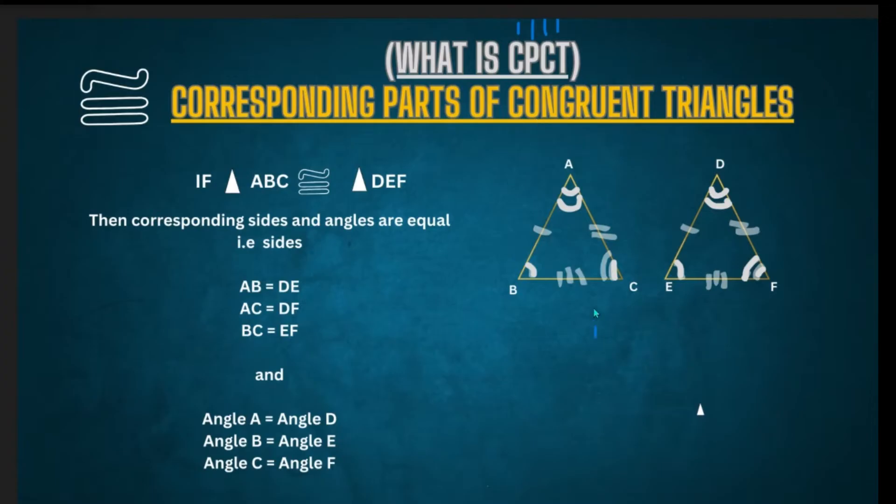So take two triangles ABC and DEF. If they are congruent, what does it mean? If they are congruent, then the corresponding sides and angles are equal.